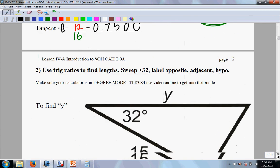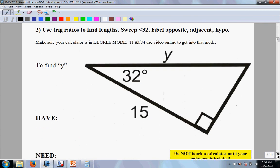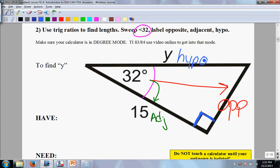Now we're going to utilize one of these ratios here. We're going to use trig ratios to find the lengths. First, we're going to start by sweeping the angle that we're working with, which is 32. Now from here we label the opposite, the adjacent, and the hypo. So this side is the opposite side from 32, that makes 15 the adjacent side, and the side that's across from the right angle is always the hypo. So now we've labeled it opposite, adjacent, and hypo.